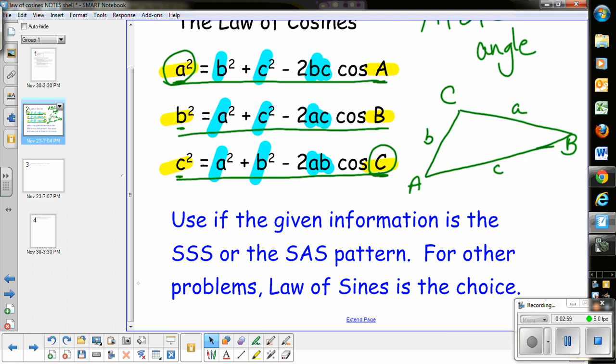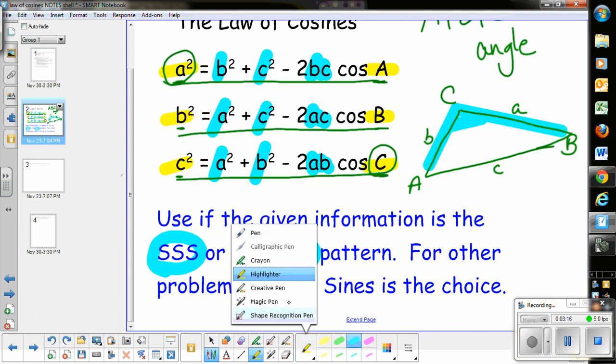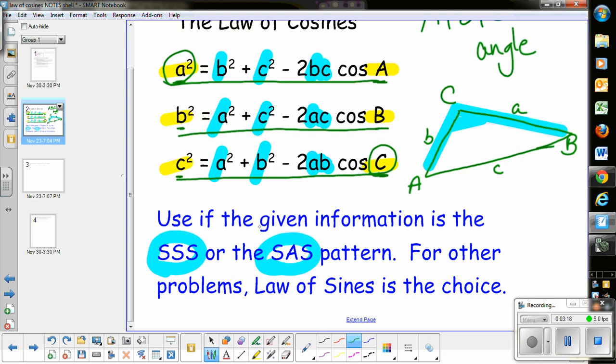You use the Law of Cosines if what you're given are three sides or side-angle-side pattern. If I'm given this side measure, this side measure, and this angle measure, that's side-angle-side. I know this number, this number, and this number, and maybe I'm trying to find that side.